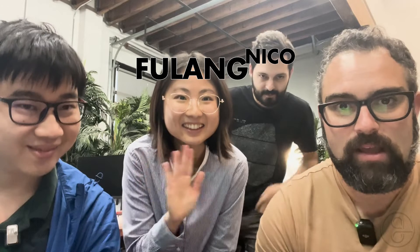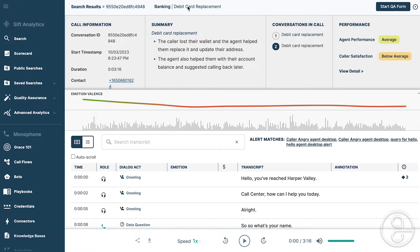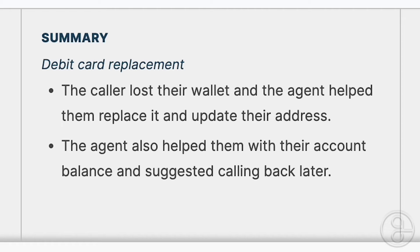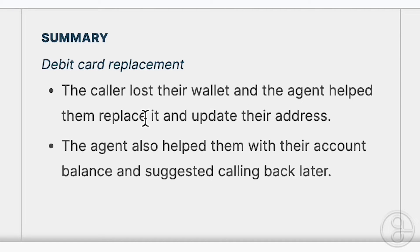We have our summary for this conversation. As I mentioned, there are multiple lenses of summarization. This is Fulong and here's Nico. First, we talked about the 2S summary — the category and subcategory. Category was banking; subcategory is debit card replacement. Pretty accurate. Now remember, there were multiple intents in the call. We also have the 1S summary, which is the same as the subcategory in this call: debit card replacement. This was summarized to just two quick bullet points: the caller lost their wallet and the agent helped them replace it and update their address; the agent also helped with the account balance and suggested calling back later. All pretty accurate.